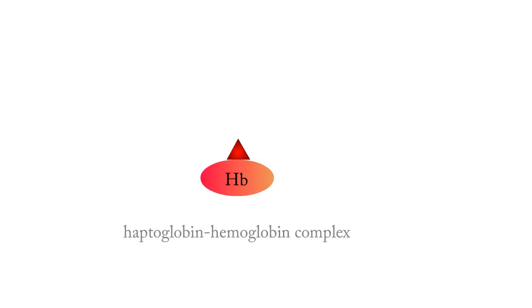Haptoglobin binds with free hemoglobin with high affinity, thereby inhibiting its oxidative activity. This produces the haptoglobin-hemoglobin complex, which is phagocytosed and removed by macrophages.